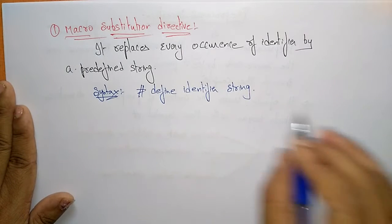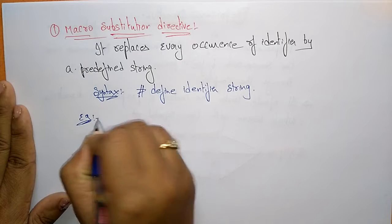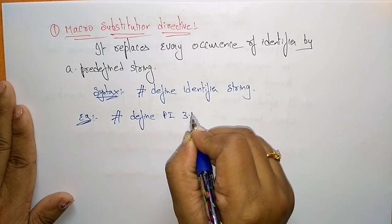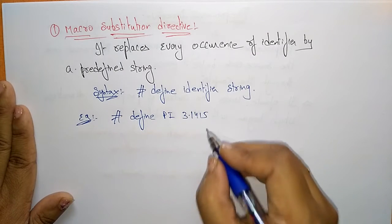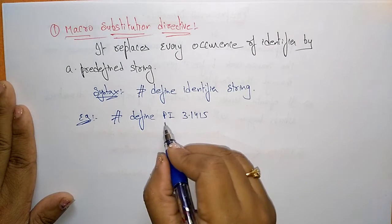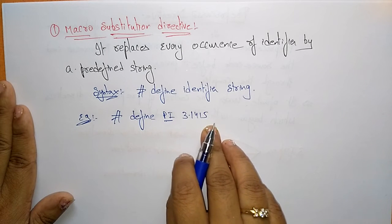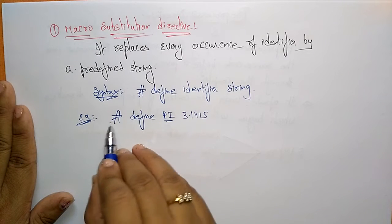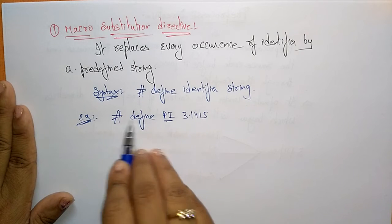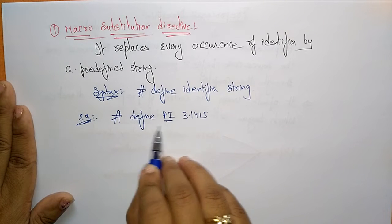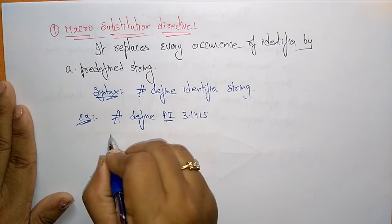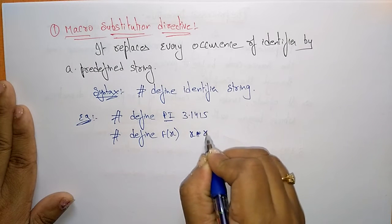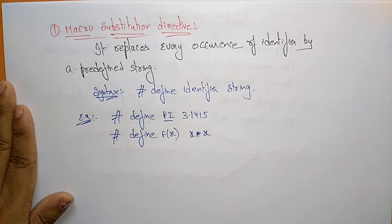For example: hash define pi 3.1415 — instead of writing 3.1415 every time in the program, you just write pi. Another example: hash define f(x) x*x — instead of writing x*x every time, just write f(x). This is the macro substitution directive using hash define.